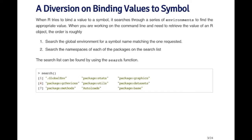When you're working at the command line and need to retrieve the value of an R object, the first thing that happens is R searches the global environment for a symbol name matching the one requested. The global environment is your workspace and consists of all the things you've defined or loaded into R. Since I defined lm in my global environment, when I call lm at the command line it's going to find that object first.